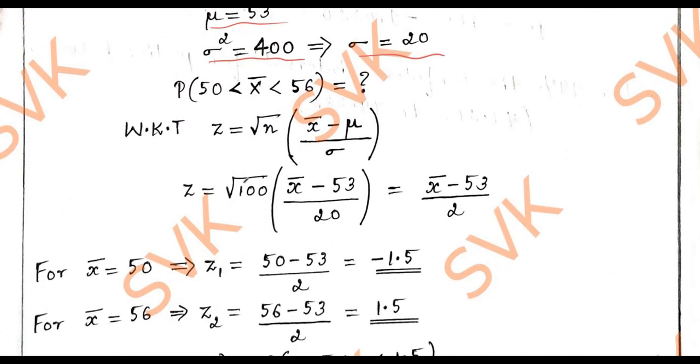I will substitute the values of n, μ and σ. Therefore, z will be represented as (x̄ - 53)/2 after simplification. Now, I will substitute x̄ value as first 50, then as 56. Then I will solve for z₁ and z₂.